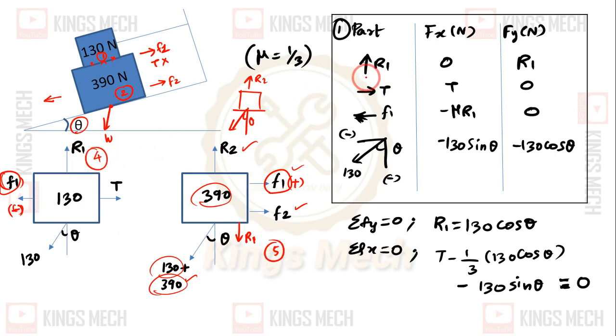Let's start with block number one. For the x-direction: R1 is positive, T is positive, F1 is negative. So summing forces in x: R1 + T - F1 = 0, which gives R1 + T - mu*R1 = 0. The mu value is 1/3, so R1 + T - (1/3)R1 = 0.